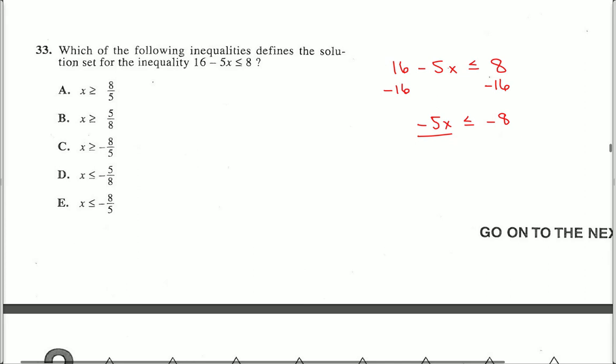to inequalities is that whenever I multiply or divide by a negative number, and a negative number only, I have to flip the sign. So this becomes x is greater than or equal to positive 8 fifths.